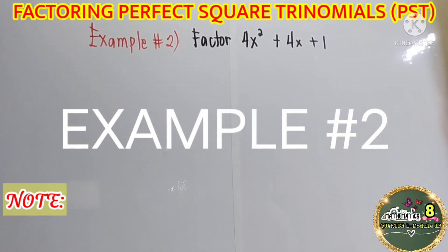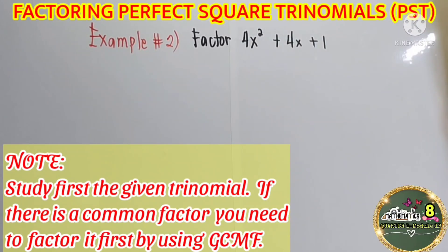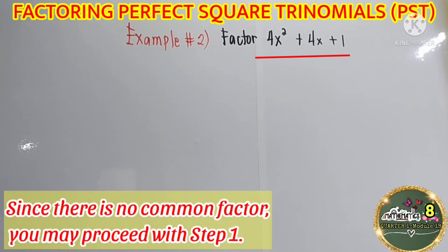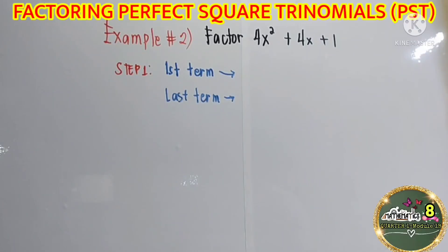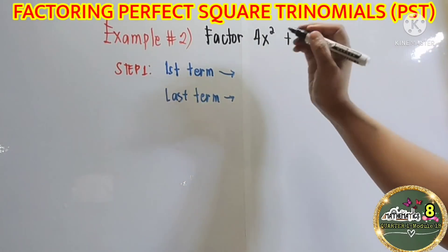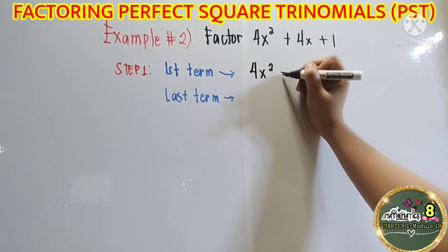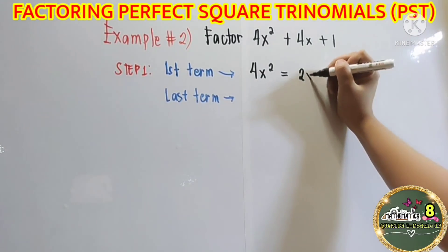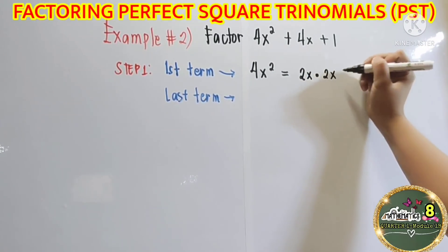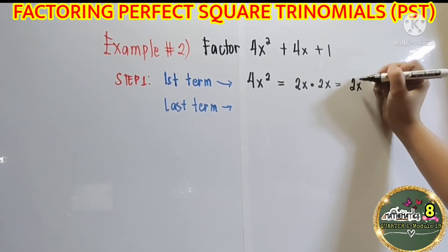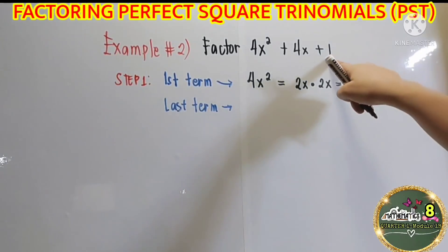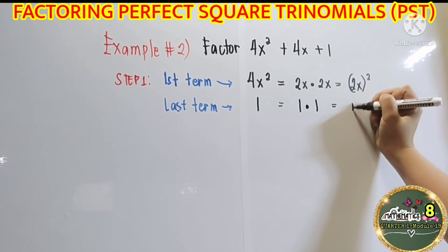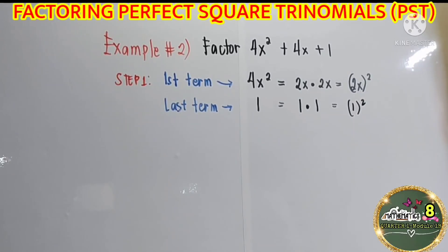Example number 2: factor 4x squared plus 4x plus 1. Since there is no common factor, you may proceed with step 1. Let us identify the first term and the last term. The first term is 4x squared — the square root of 4 is 2, and the square root of x squared is x, so 2x times 2x equals 4x squared. The last term is 1 — the square root of 1 is 1, and 1 times 1 equals 1 squared. Both are perfect squares.